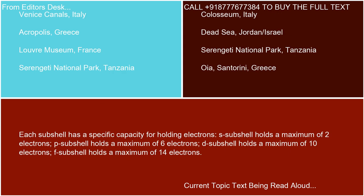Each subshell has a specific capacity for holding electrons. The S subshell holds a maximum of 2 electrons, the P subshell holds a maximum of 6 electrons, the D subshell holds a maximum of 10 electrons, and the F subshell holds a maximum of 14 electrons.